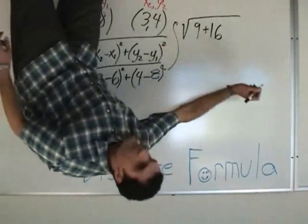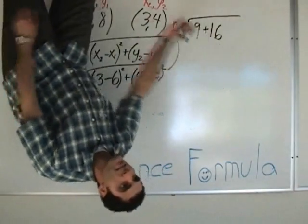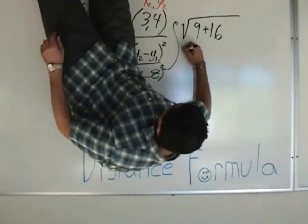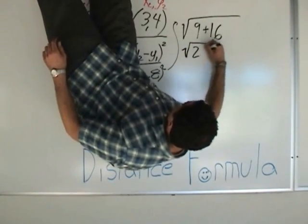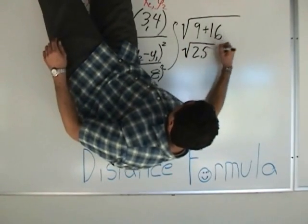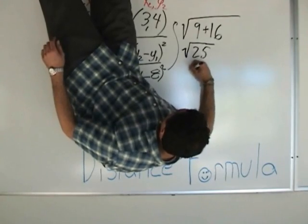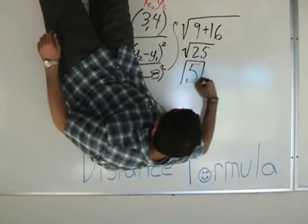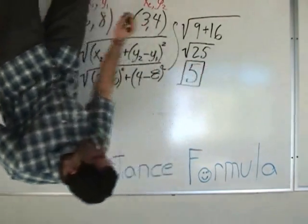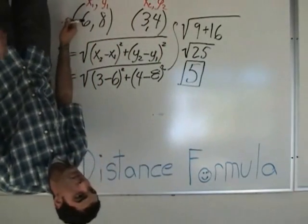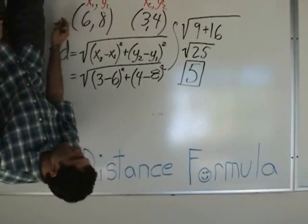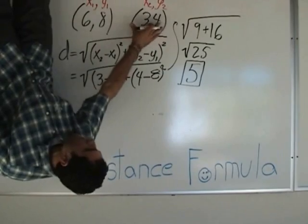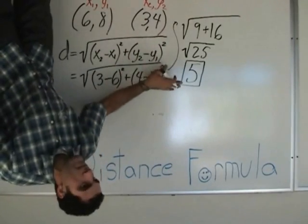9 plus 16 under the square root — square root of 25. The distance between (6, 8) and (3, 4) is 5.